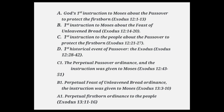Section C1 is the perpetual Passover ordinance, the instruction given to Moses, recorded in Exodus 12:43–51. Section B1 is the perpetual feast of unleavened bread ordinances, with the instruction given to Moses in Exodus 13:3–10. Section A1, the final part, is the perpetual firstborn ordinance to the people, recorded in Exodus 13:11–16.